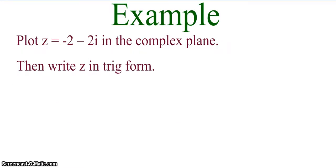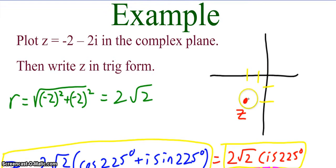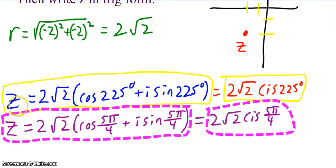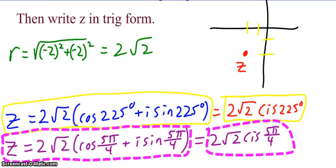Plot z equals negative 2 minus 2i in the complex plane, then write z in trig form. Pause the video and unpause when you're ready to check your work. To plot it, I went 2 left and 2 down — there's my point z. To write this in trig form, first I need to find r. r is the square root of negative 2 squared plus negative 2 squared, so that's 2 root 2. I can write z equals 2 root 2 times the cosine of 225 degrees plus i sine of 225 degrees. So we need to be aware of what the angle is — that's the angle we're referring to when using trig form.